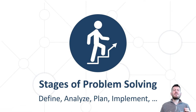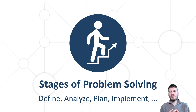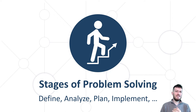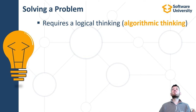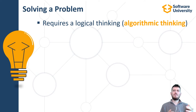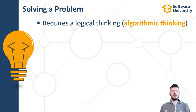The main stages of problem solving are: defining the problem, analyzing the problem, identifying potential solutions, choosing a solution, planning actions or algorithm, implementing the actions or algorithm, and reviewing the results or testing. Solving a problem requires logical or algorithmic thinking and involves all of these stages.